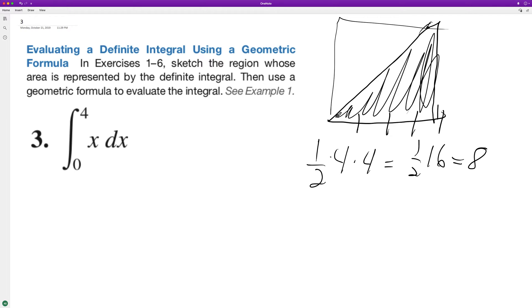But let's go ahead and integrate this. So zero to four, the integral of x is x raised to the one plus one over one plus one, and then we end up with x squared over two from zero to four.